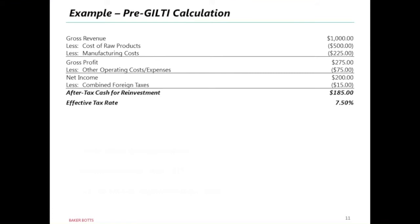Before GILTI, starting with gross revenue of $1,000, subtract raw products and manufacturing costs to get gross profit of $275. Subtract other operating costs of $75 to get net income of $200. After paying $15 of foreign taxes with no subpart F income and no repatriation, the after-tax cash for reinvestment was $185, and the effective tax rate was 7.5% on this combined income.